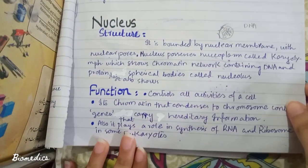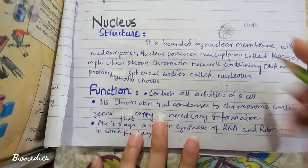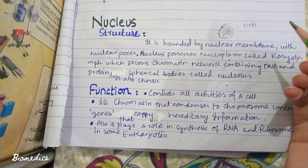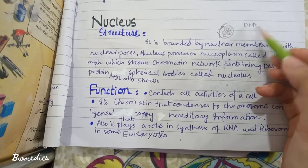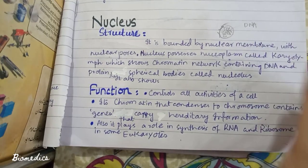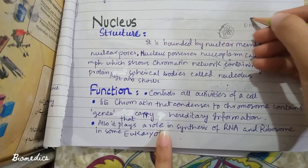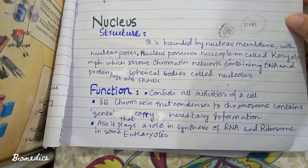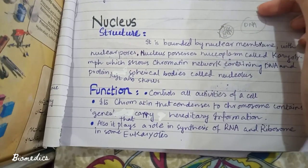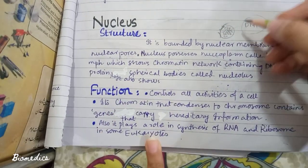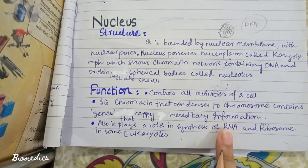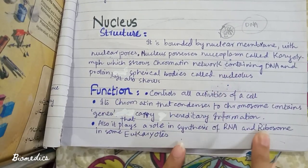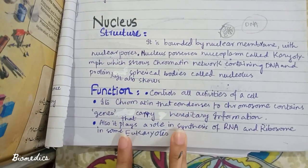The nucleus has three important functions: it controls all the activities of the cell; it contains genes on the DNA which store all genetic information; and the nucleolus can synthesize RNA and help produce ribosomes.